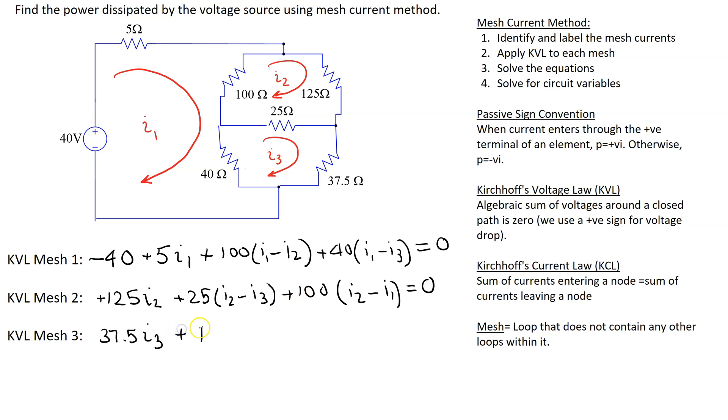So we get 40 I3 minus I1 and then plus 25 I3 minus I2 equals zero. This completes the process of applying Kirchhoff's voltage law and writing the KVL equation for each mesh.